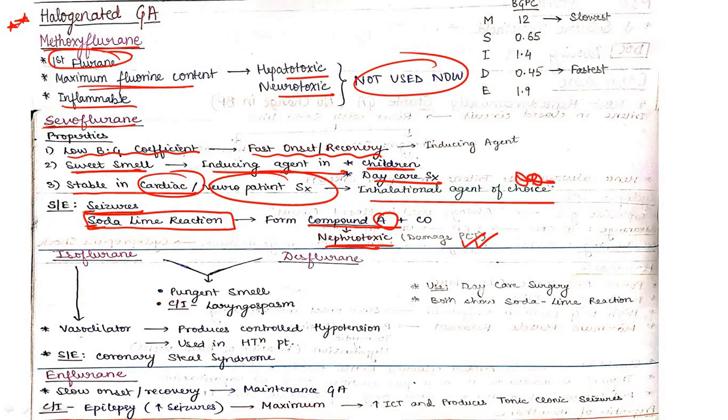Isoflurane and desflurane both have pungent smell, so both are contraindicated in laryngospasm. Isoflurane has property of vasodilation, produces controlled hypotension so used in hypotensive situations.